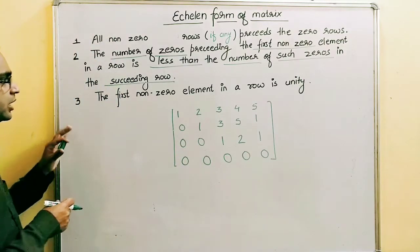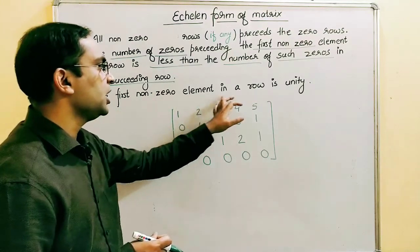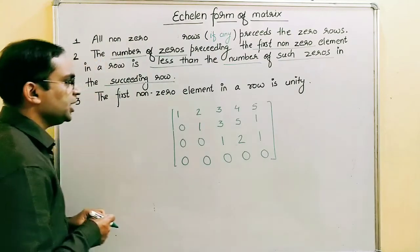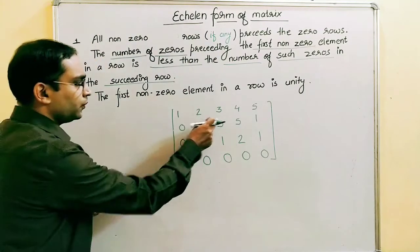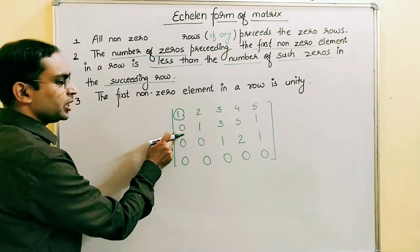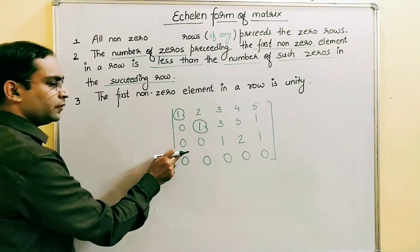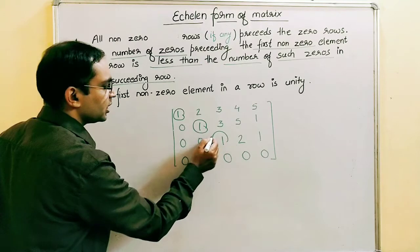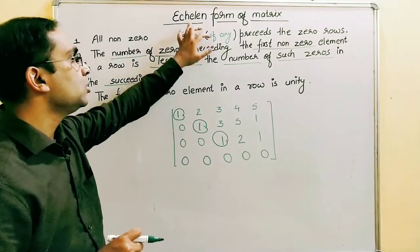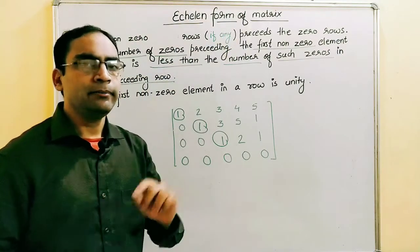Condition number three: the first non-zero element in a row has to be unity. We can see that in each row the first non-zero element is one — unity — in the first row, the second row, and again in the third row. Such a matrix is known as the echelon form of a matrix.